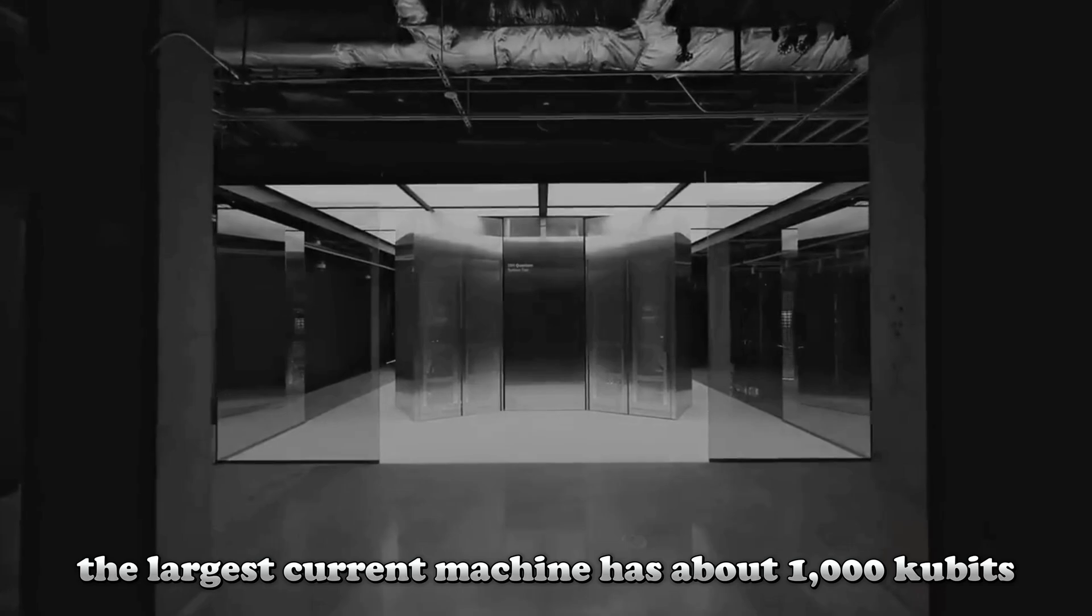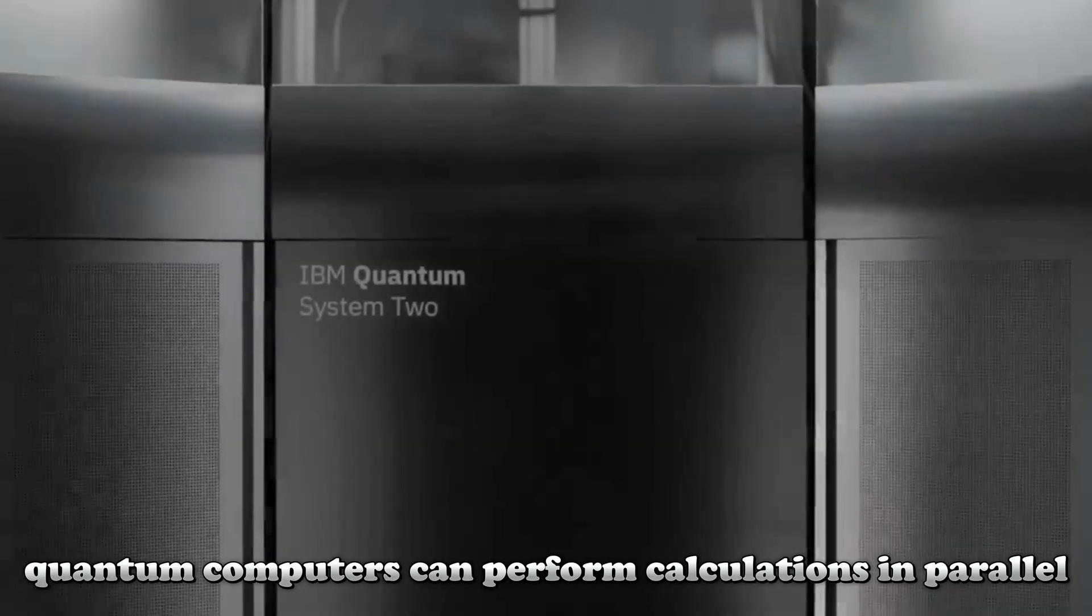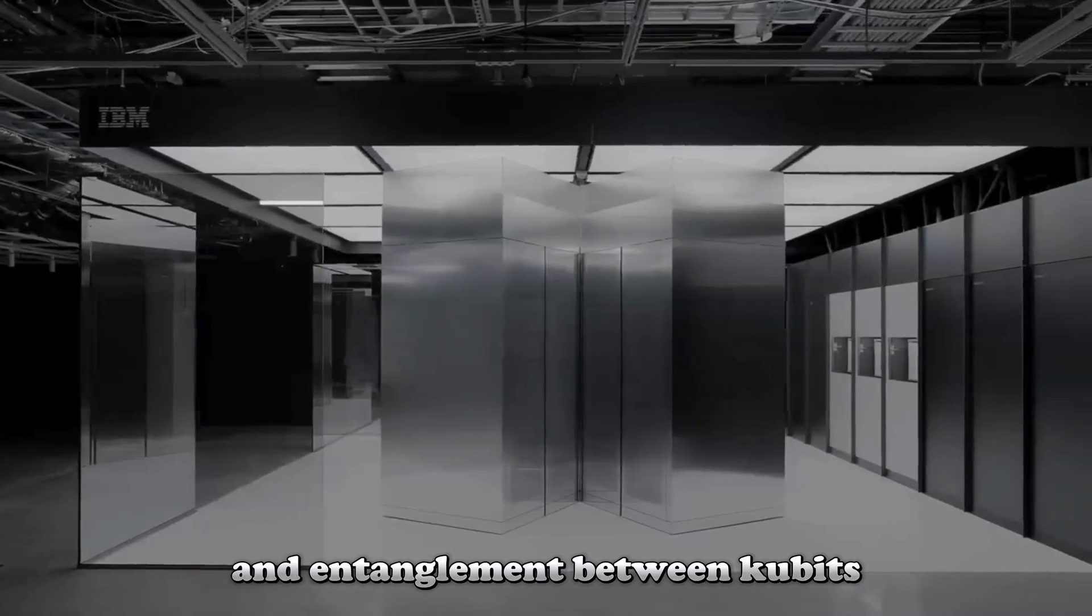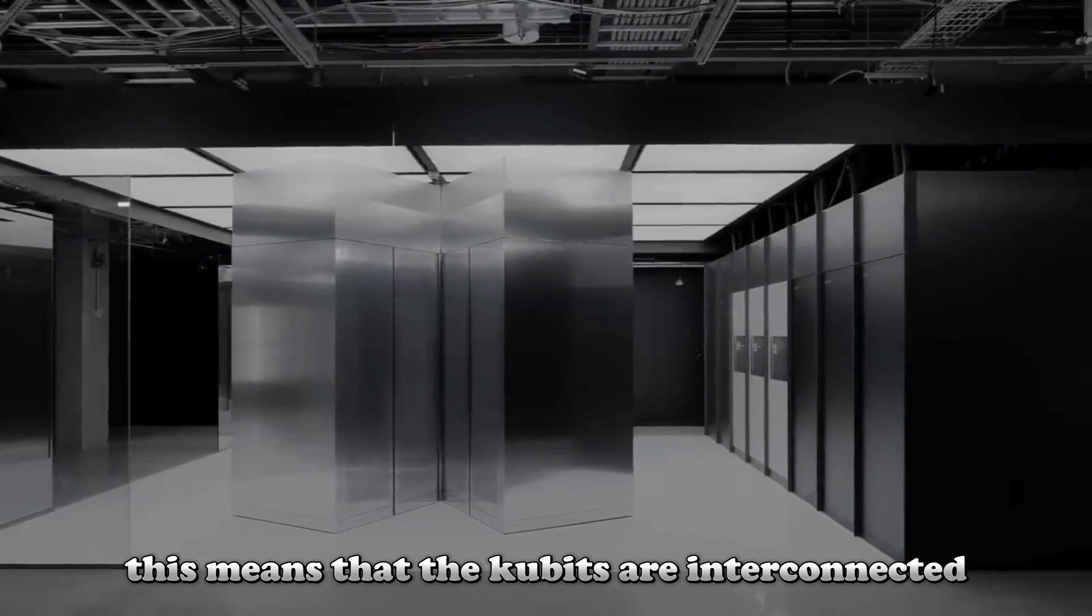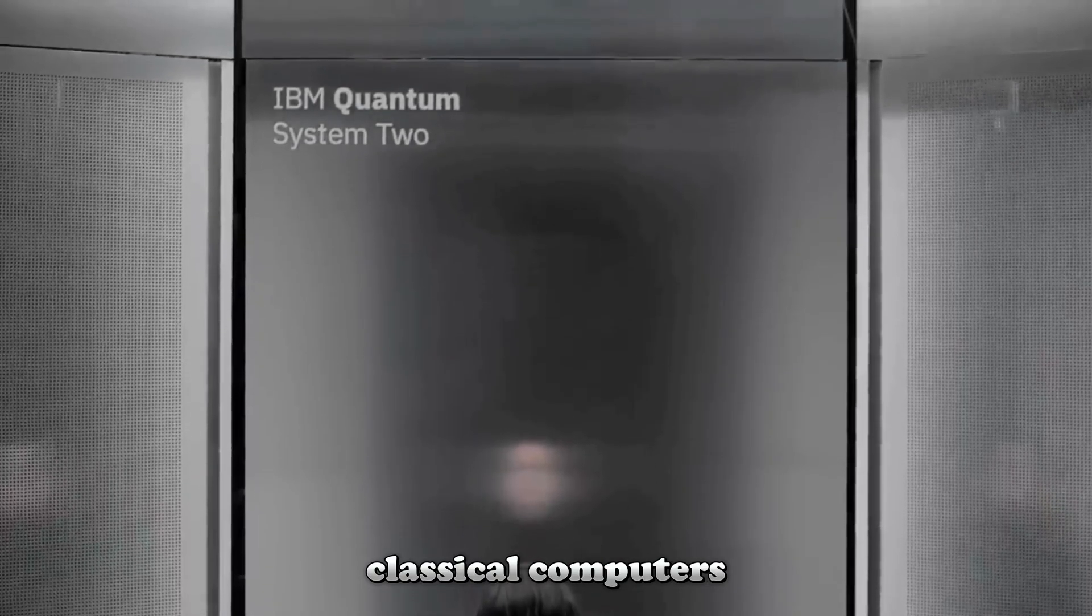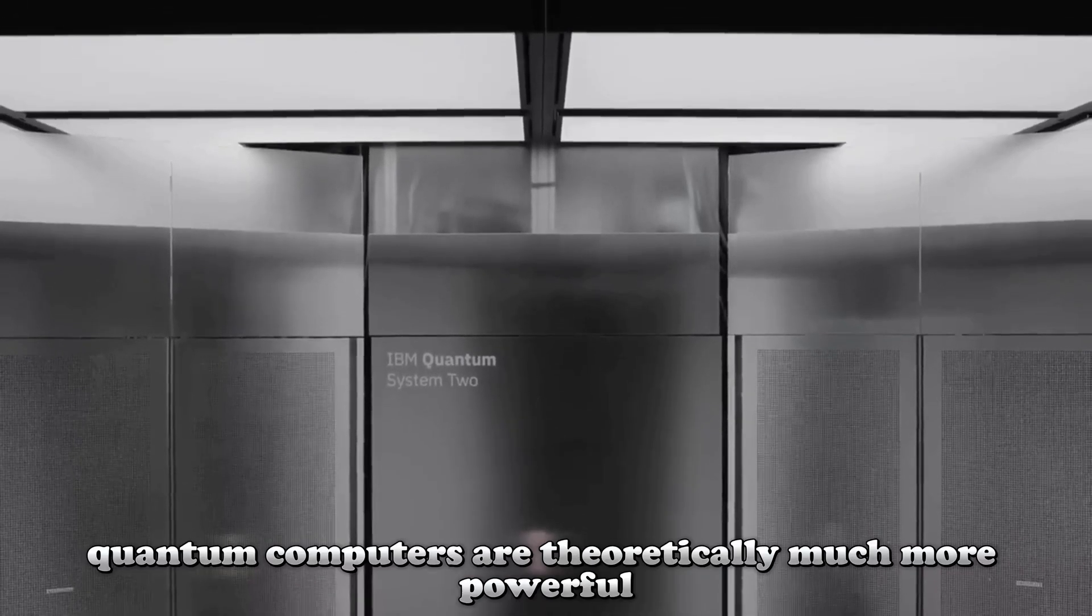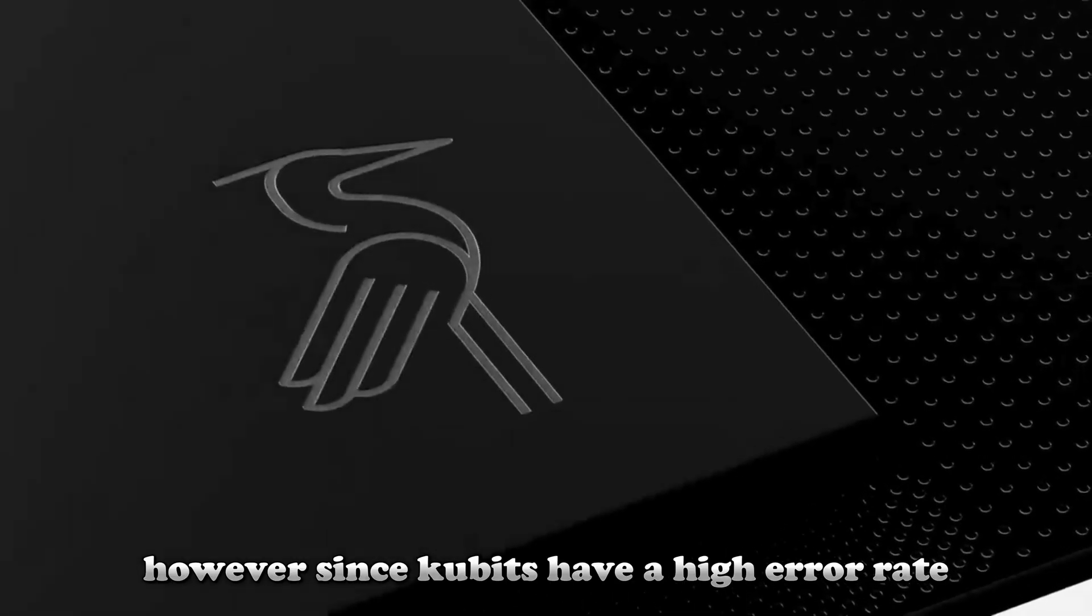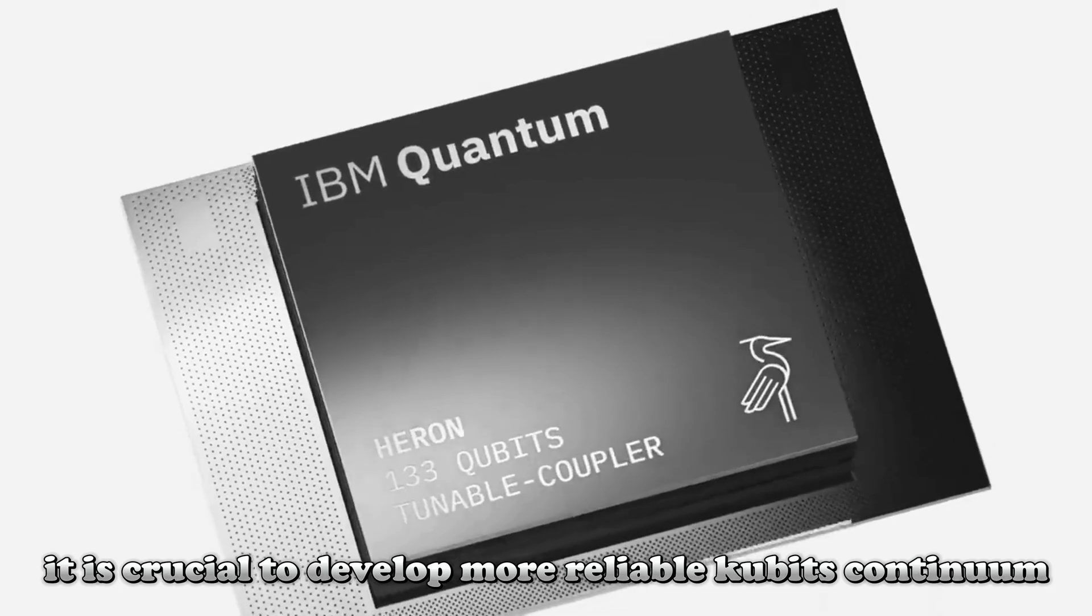The largest current machine has about 1,000 qubits. Quantum computers can perform calculations in parallel thanks to the laws of quantum mechanics and entanglement between qubits. This means that the qubits are interconnected and the state of one instantly affects the other. Classical computers can only perform sequential operations. Therefore, quantum computers are theoretically much more powerful. However, since qubits have a high error rate, it is crucial to develop more reliable qubits.